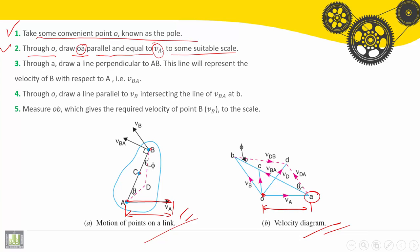we'll draw point A. This is VA parallel to VA and equal to VA in distance with a given scale.